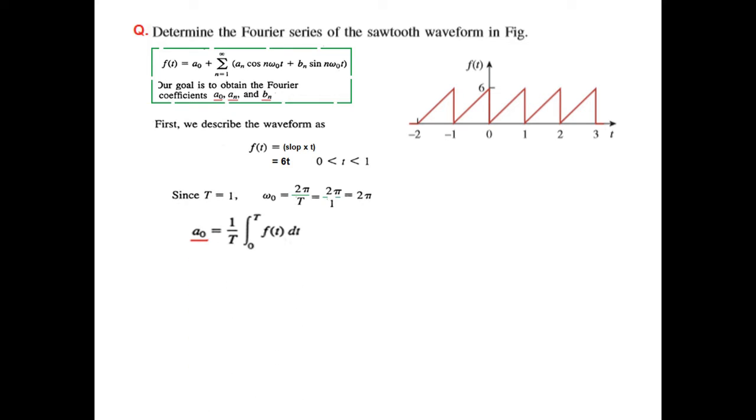So with this value, now we'll try to find the value of a₀ first. This equation, putting the values, T is now 1, so 1 over 1, 0 to T, function is 6t, so 6t and integral of t is t² over 2. We'll put the limit 0 to 1, and by solving, we'll find a₀ to be 3.